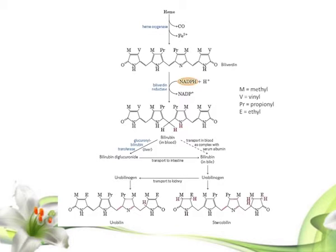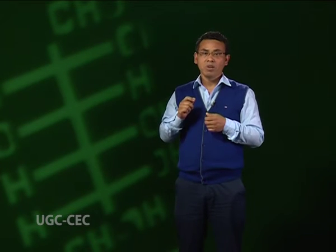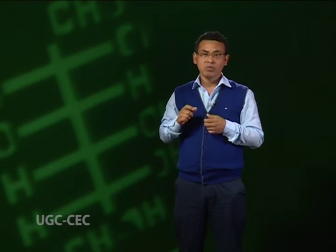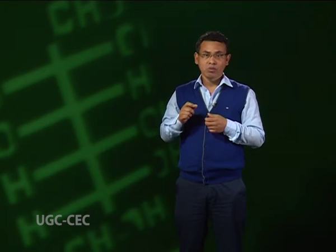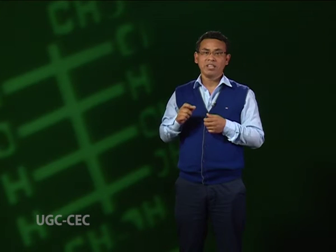Impaired liver function or blocked bile secretion causes bilirubin to leak from the liver into the blood, resulting in yellowing of the skin and eyeballs — a condition called jaundice. Determination of the concentration of bilirubin in the blood may be useful in diagnosing underlying liver disease. Newborn infants sometimes develop jaundice because they have not yet produced enough glucuronyl transferase to process their bilirubin. A traditional treatment is exposure to a fluorescent lamp, which causes photochemical conversion of bilirubin to compounds that are more soluble and easily excreted.